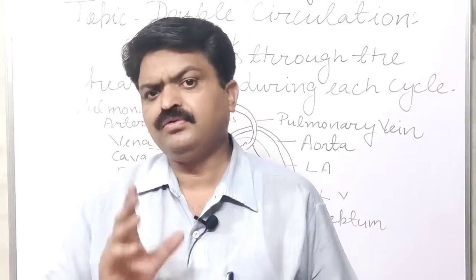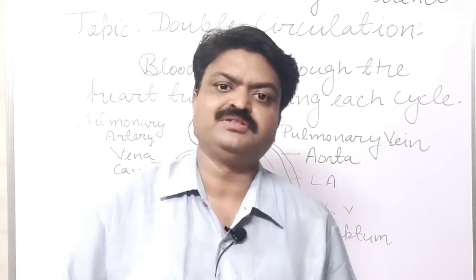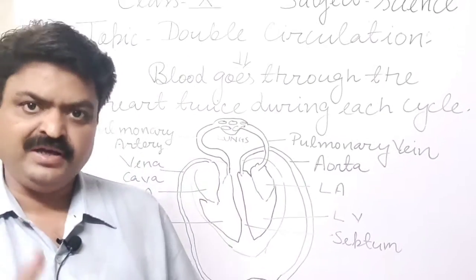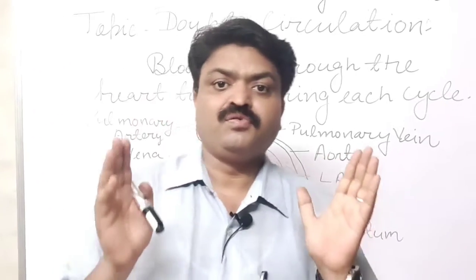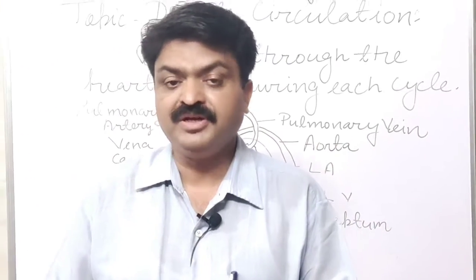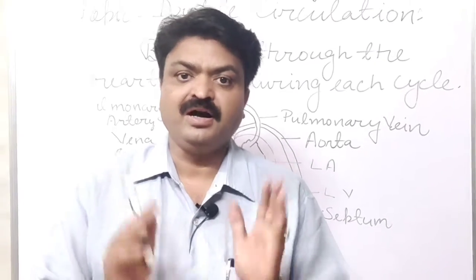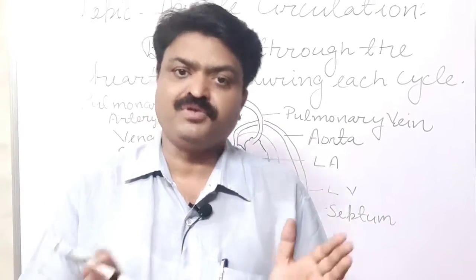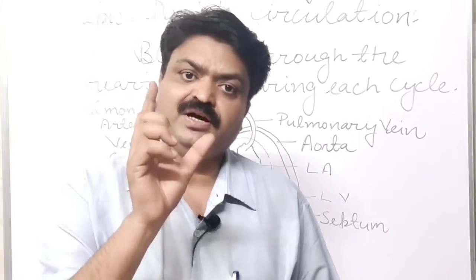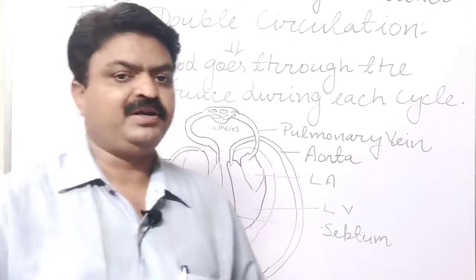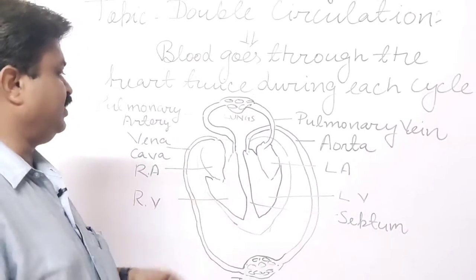All humans have double circulation. For this they have a special heart. Our heart is a four-chambered organ. These four chambers are separated from each other with the help of walls and a thick wall that is known as the septum. So there are four chambers found in our heart.